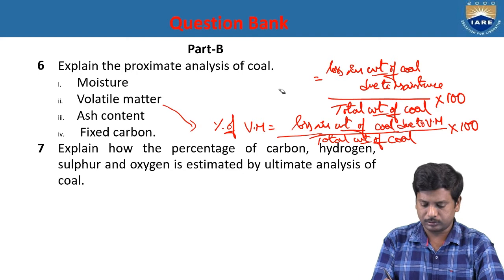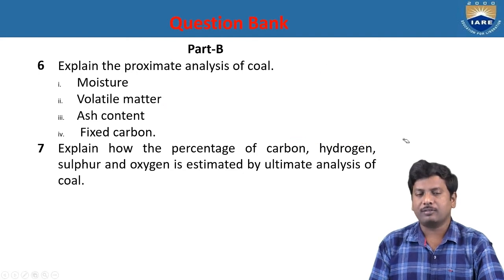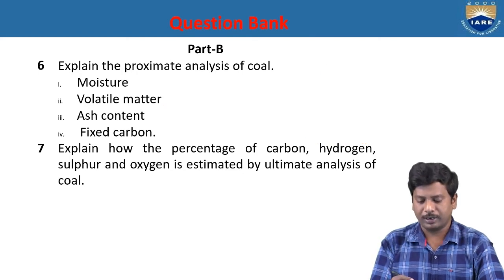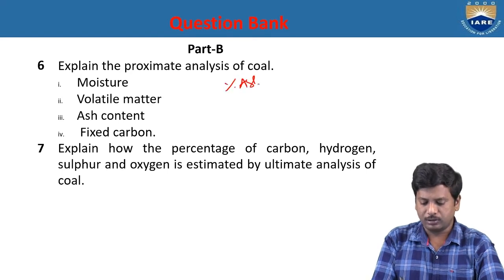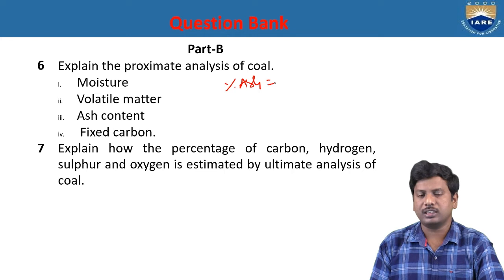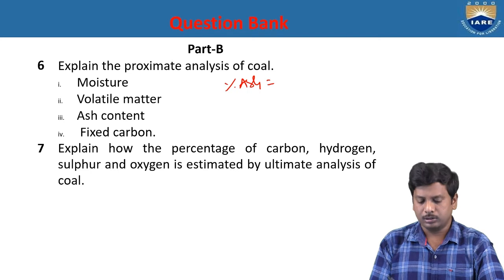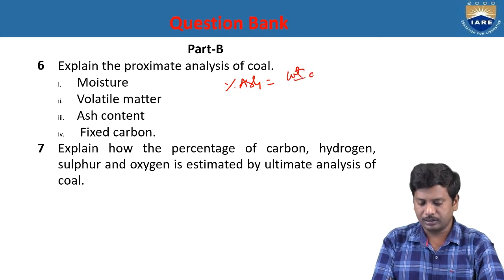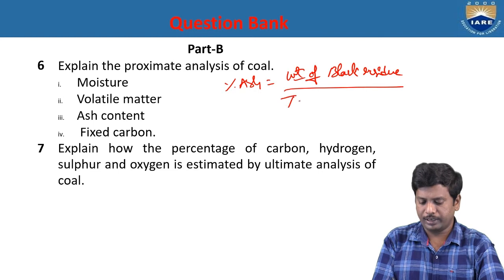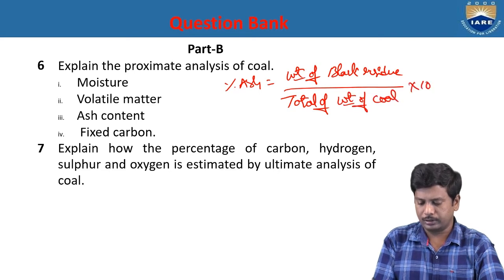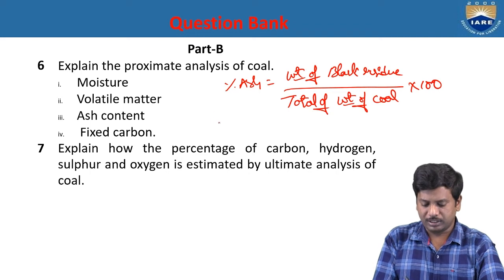Next, percentage of ash. Ash content is determined after the completion of the two previous tests — moisture and volatile matter. The coal sample is again heated to 700 to 800 degrees centigrade. Finally, a black residue is obtained. The percentage of ash equals the weight of the black residue divided by total weight of coal, multiplied by 100. Next, percentage of fixed carbon.